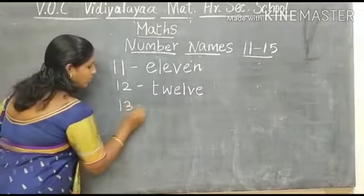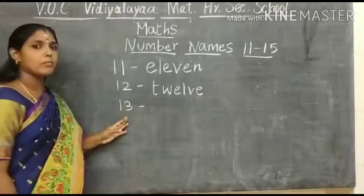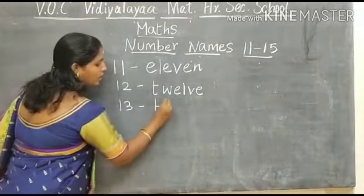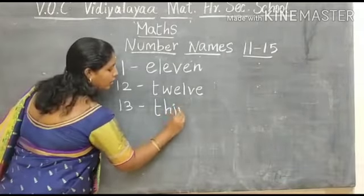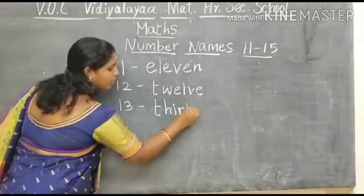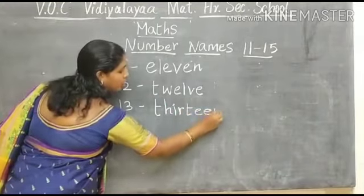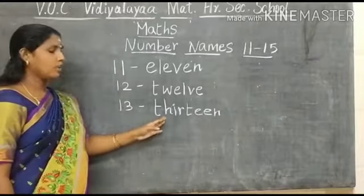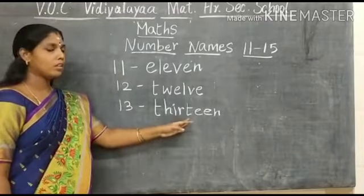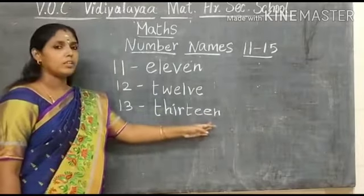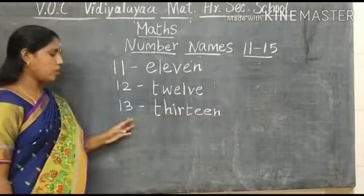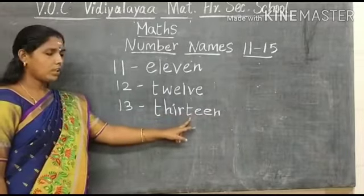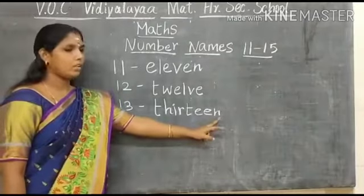The next number is? What number is this? This is number 13. What is the spelling of number 13? T, H, I, R, T, E, E, N. 13. What is the spelling of number 13? T, H, I, R, T, E, E, N. 13.